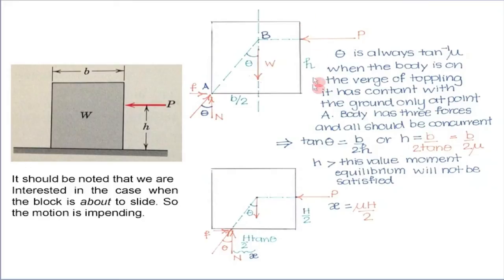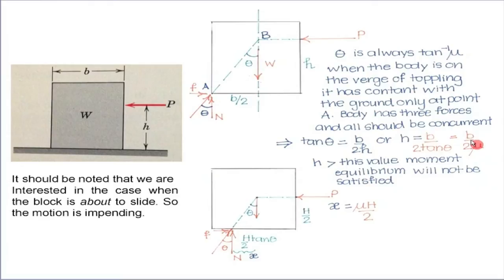We want to start the block sliding without tipping, and the critical height h = b/(2*mu_s) tells us the maximum height at which to apply the force. Note: if the width b is larger, the critical height is larger, consistent with our experience that a wide cupboard is harder to tip. If the coefficient of friction is large, the critical height decreases — meaning when friction is large, sliding is difficult but tipping is easy. This completes all the categories of problems typically encountered in friction.